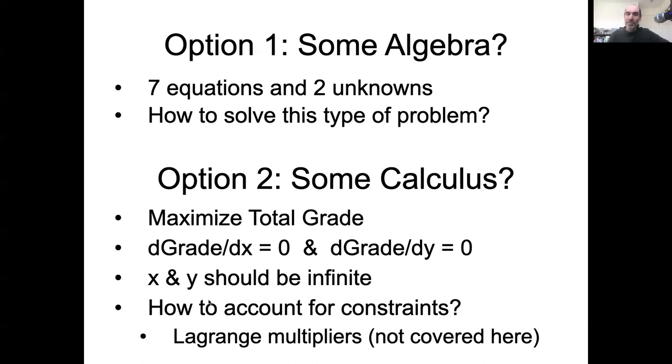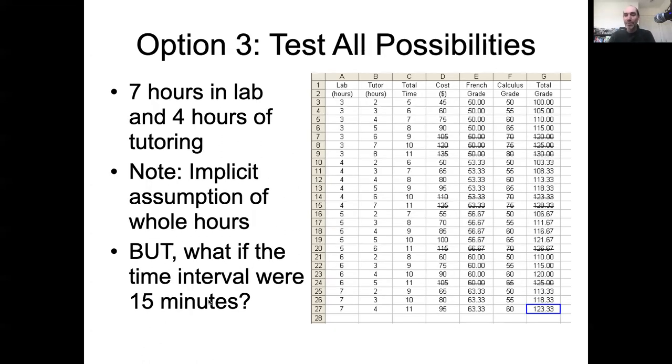One numerical option would be brute force. So option three, test all possibilities. So here, imagine a spreadsheet where I plugged in, starting with the minimum need to spend, three hours in the language lab, two hours of tutoring.